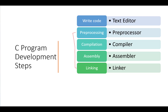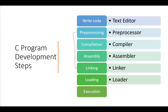After compiling, when you give the execution command, two things happen. First, the loader comes into play, which loads the program into main memory. Thereafter the final execution happens once the CPU is allocated to your program. So these are the seven steps that happen between writing your code and the execution of the program.